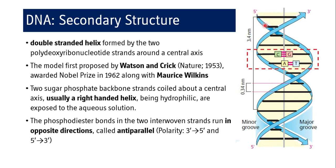The phosphodiester bonds in the two interwoven strands run in opposite directions — one strand running from 5' end to 3' end, and the other also from 5' to 3' but in the opposite direction. The free 5' group means this is the 5' end, and the opposite end is the 3' end. These two strands are antiparallel to each other.